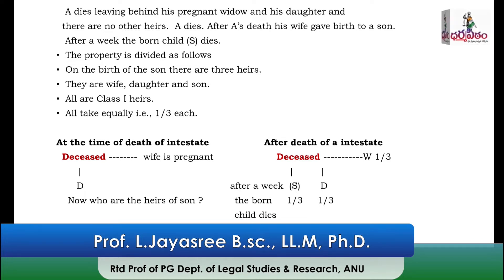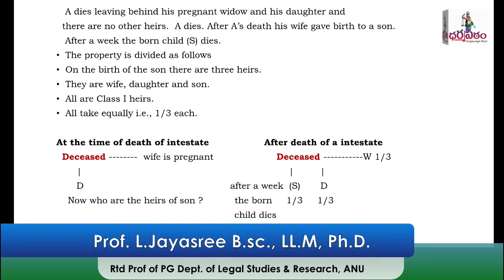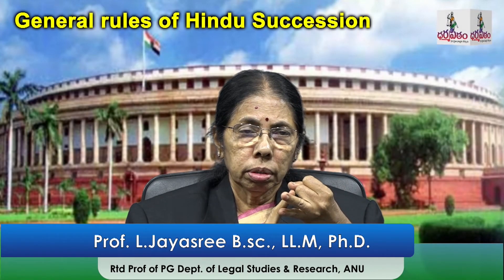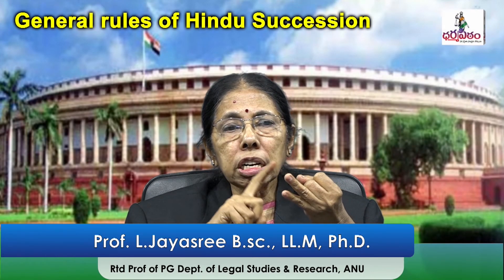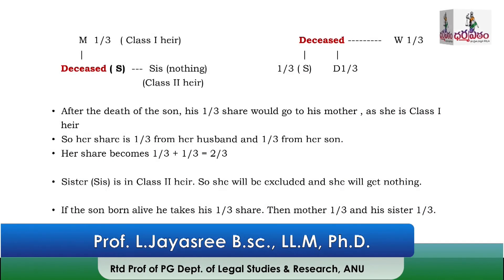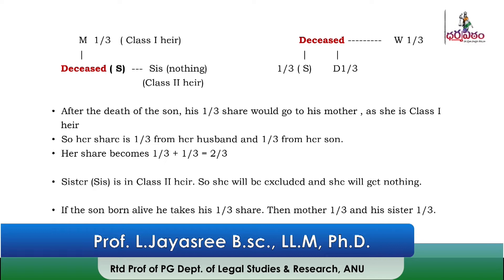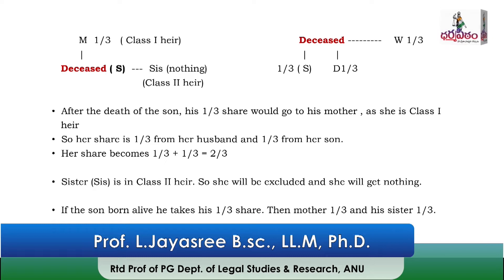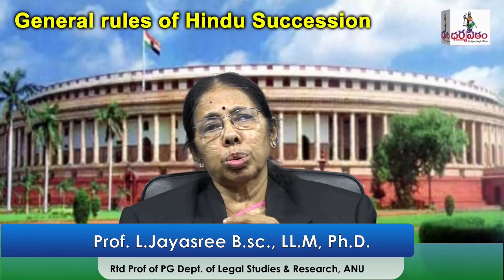So what are the shares of wife and daughter? The wife is receiving one third from her husband and one third as a mother from the son — that is, her total property is two thirds. Whereas the daughter is getting only one third from the father, and from the brother she gets nothing because she is a Class 2 heir.